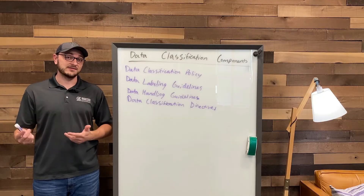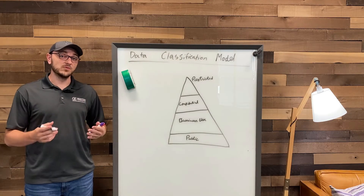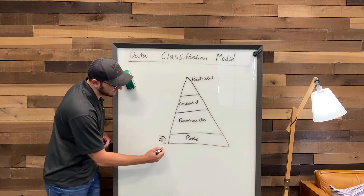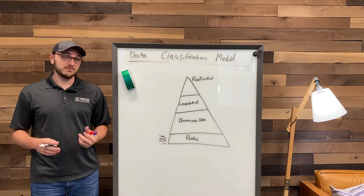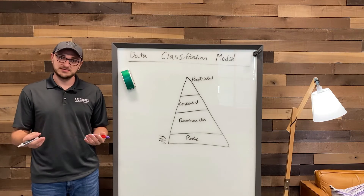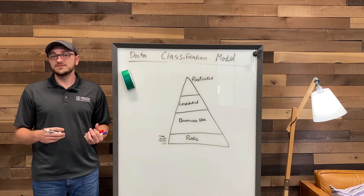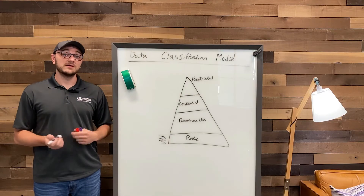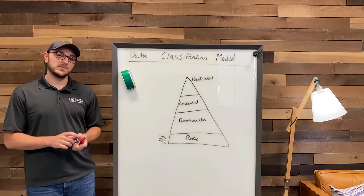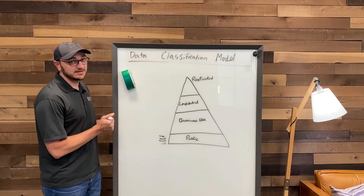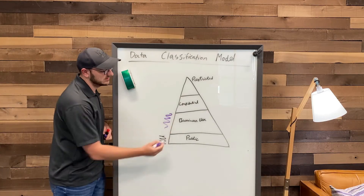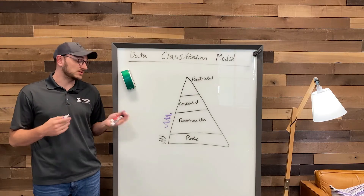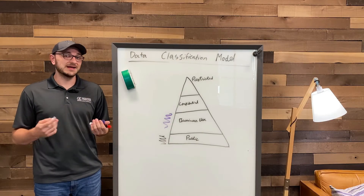Now let's take a look at an example data classification model. Here we have an example of a four-tier classification model, and we'll start from the bottom — public data. Public data is open to all of the public, whether they're in the organization or not, or it's planning to be released to the public. This is information that's not that important to protect; if it's taken, that's fine because it's already public. The second level is the business use level, which focuses on data used mostly in day-to-day operations. This is still sensitive information, so you need the right approvals in place to use it, but if it's lost or compromised it's not a big deal.